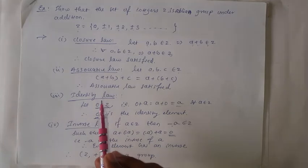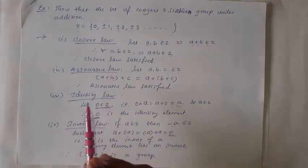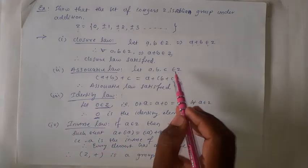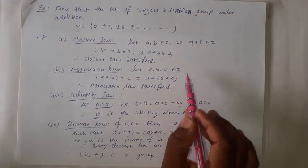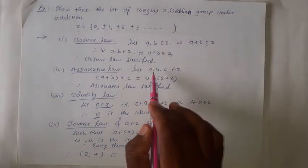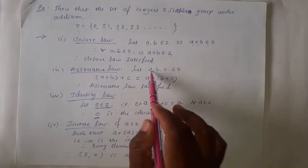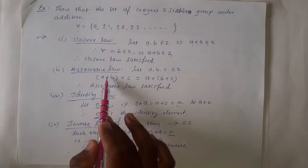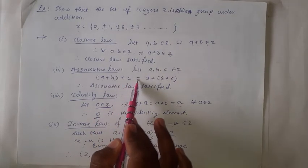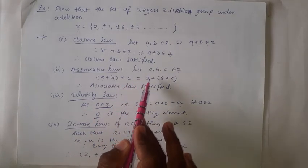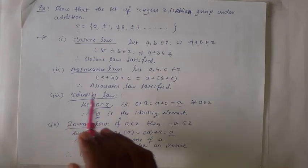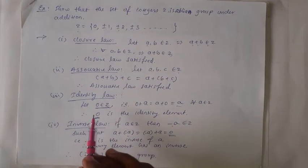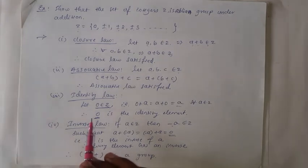Then the Associative law. We know that addition is associative for any set of numbers. Here the set is Z, the set of integers. Let us consider three elements a, b, c belonging to Z. Then (a + b) + c is equal to a + (b + c). Therefore, the Associative law is satisfied.